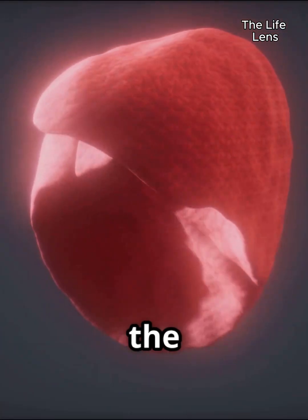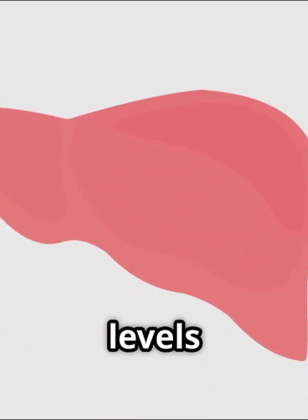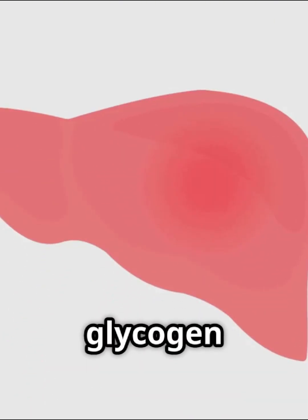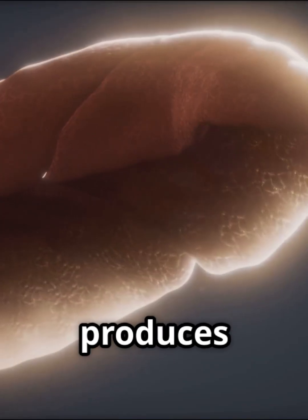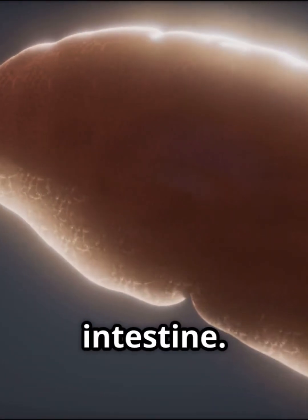Beyond detoxification, the liver plays a key role in metabolism. It helps regulate blood sugar levels by storing glucose as glycogen and releasing it when needed. It produces bile, a substance essential for digesting fats in the small intestine.